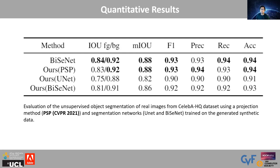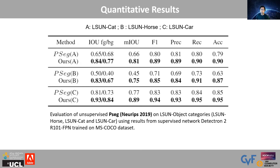Different versions of our method can perform as well as the supervised approach. We also show evaluation against a baseline supervised approach on ELSON object categories using results from the supervised network Detectron2 trained on the MSCOCO dataset. Again, our method outperforms the competing method. For example, on the ELSON-HORS dataset, our foreground-background IOUs are far better than the competing method PSEC.